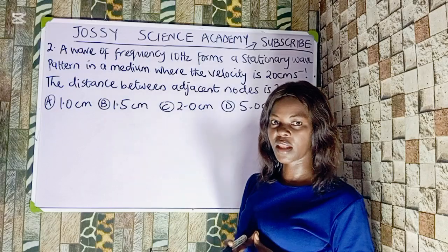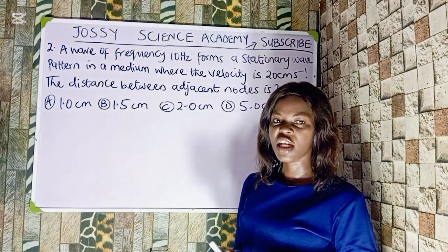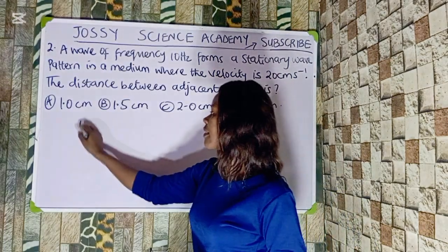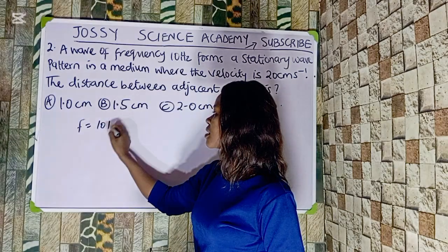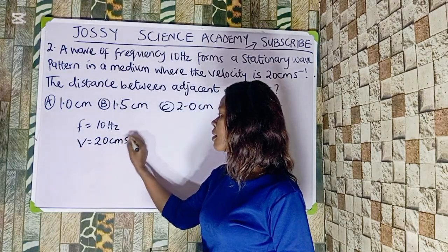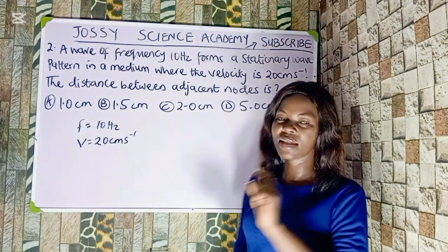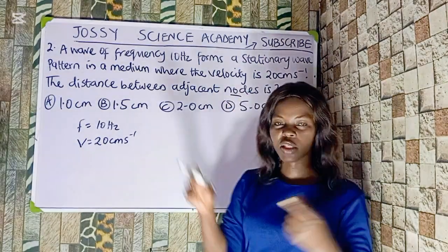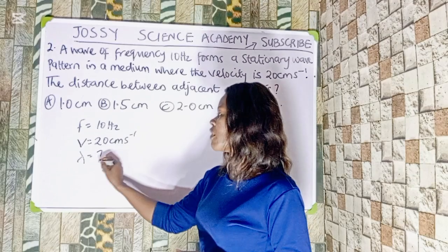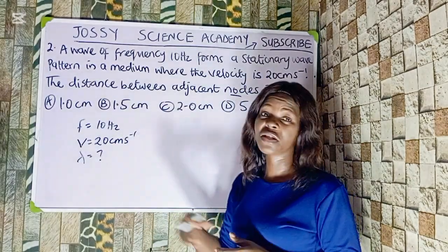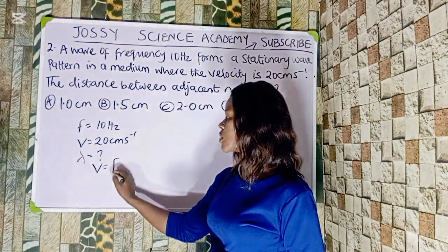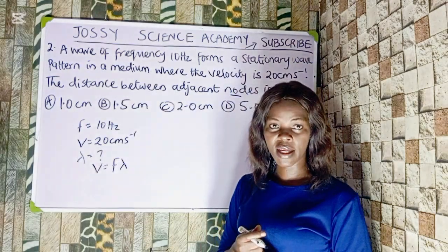Before solving this question, let's note our data parameters. The frequency F is given as 10 hertz, and the velocity V is 20 centimeters per second. The question asks for the distance between adjacent nodes. We must note this point — adjacent nodes means two nodes meeting together; they're looking for the distance between two nodes. So let's first find the wavelength using V equals F lambda.